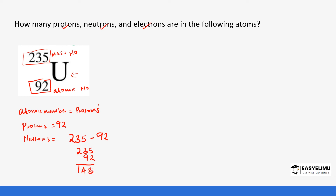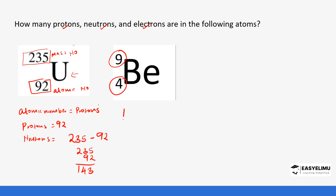The number of electrons for uranium is also 92 because in a neutral atom the number of electrons always equals the number of protons. For beryllium, it has a mass number of 9 and an atomic number of 4. The number of protons is 4, and the neutrons are found by subtracting 4 from 9, giving us 5 neutrons. The number of electrons is also 4.